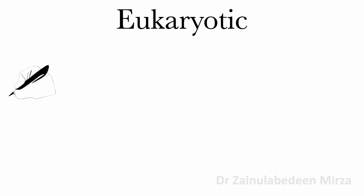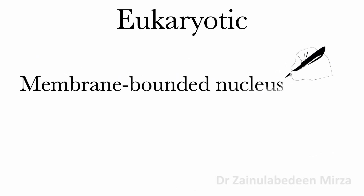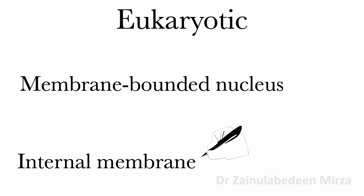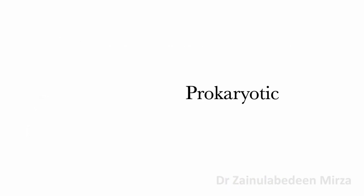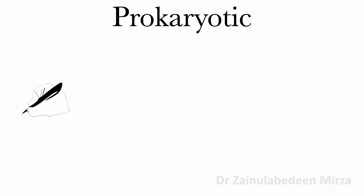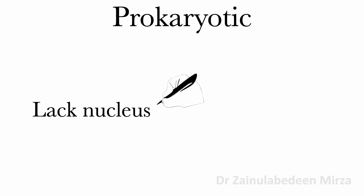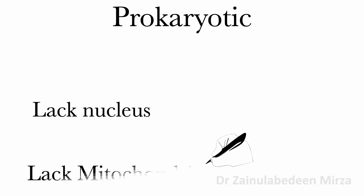In contrast, eukaryotic cells have a membrane-bounded nucleus and internal membranes. Prokaryotic cells are known as single-cell organisms that lack a nucleus, mitochondria, and other membrane-bound organelles.